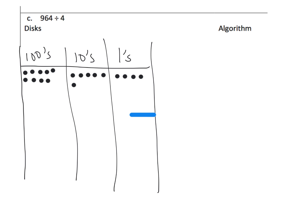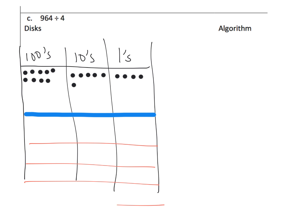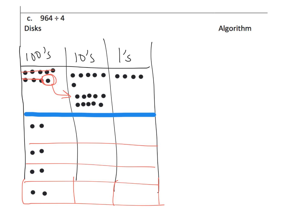With 9 hundreds sorted into 4 groups, each group gets 2 dots, using up 8 of the 9 hundred-dots. We have 1 dot remaining that is going to get regrouped — cashed in for 10 tens. So instead of having 1 hundred, we're going to have 10 tens plus the original 6 tens, giving us 16 tens total.